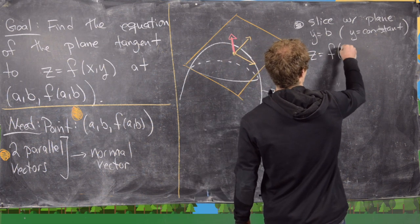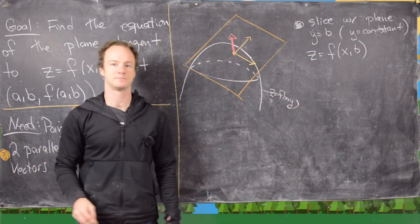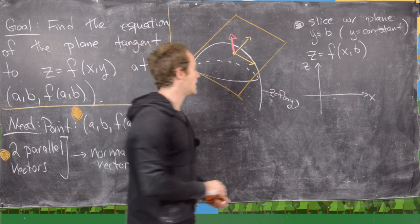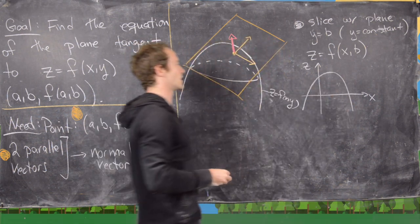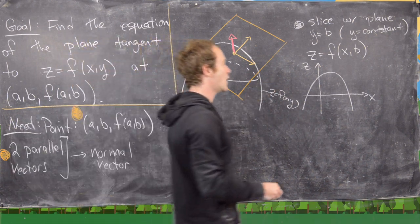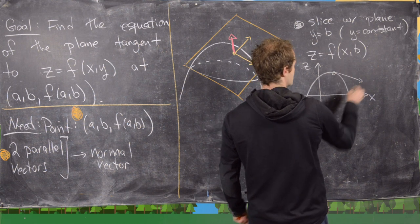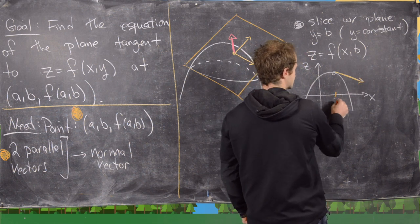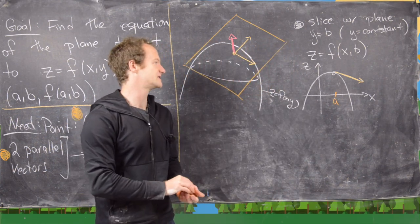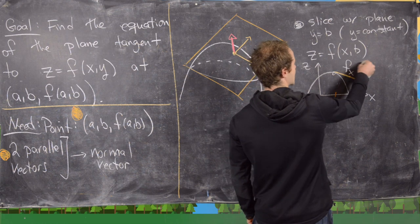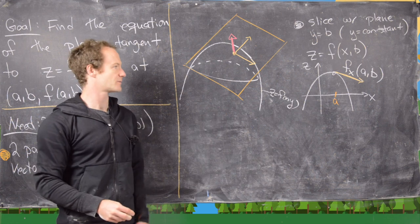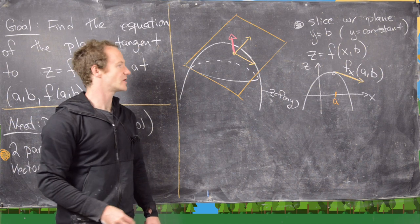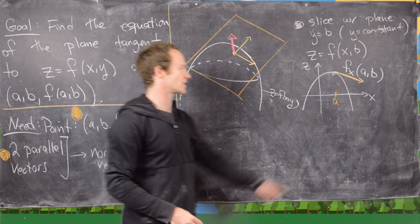That means we get the curve z equals f of x comma b, where b has been fixed. If we draw this resulting curve in the xz-plane, it looks like a parabola in the picture drawn here. The slope of the tangent line at the point with x-coordinate a is given by the partial derivative with respect to x evaluated at a and b — because we're holding y equal to a constant and varying x.